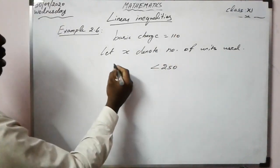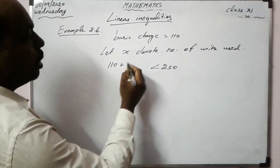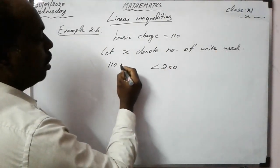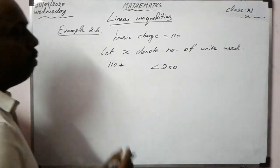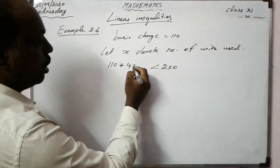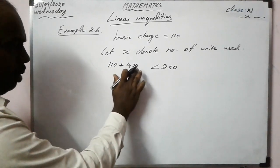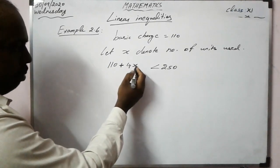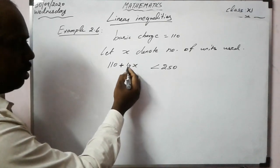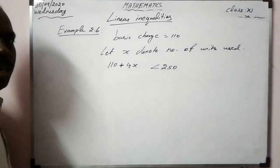Basic charge is 110. So 110 plus 4x represents the total bill, since the charge is 4 rupees per unit. If x is 1 unit, that is 4×1; 2 units means 2×4; 3 units means 3×4. So the total amount must be less than 250.